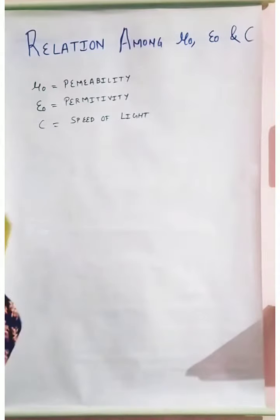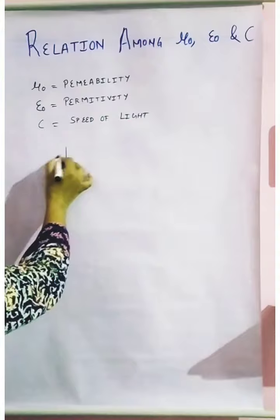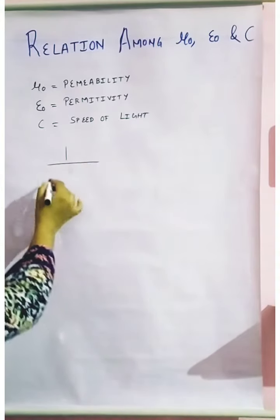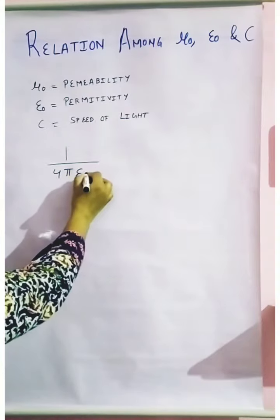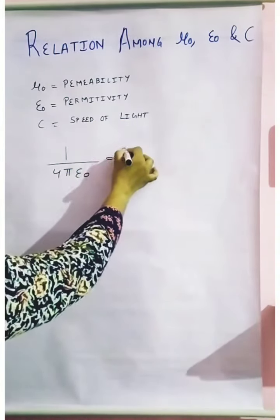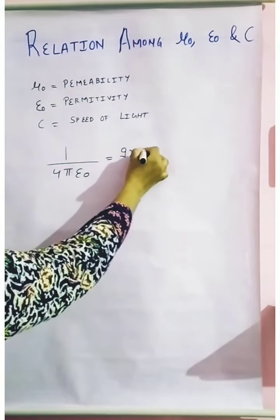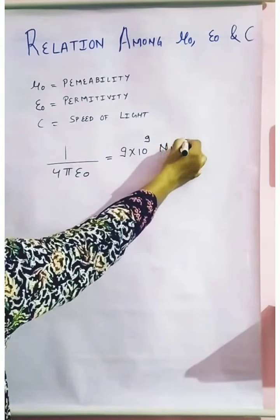We already know the value for this. We know that absolute permittivity in the free space in electrostatics, 1 upon 4πε₀, gives us the value of 9×10⁹ newton meter square per coulomb square. This we already know.